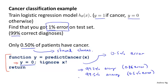Going from 99.2% to 99.5% accuracy — did we do something useful, or did we just replace our code with something that predicts y equals 0 more often? If you have very skewed classes, it becomes much harder to use classification accuracy, because you can get very high accuracies or very low errors, and it's not always clear if you're actually improving the quality of your classifier. Predicting y equals 0 all the time can bring error down to as low as 0.5%. So we need a different evaluation metric.